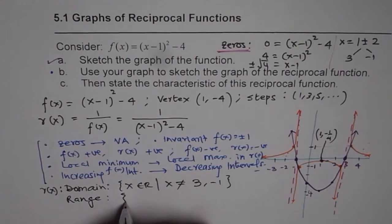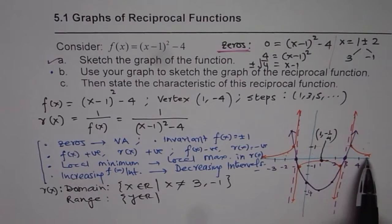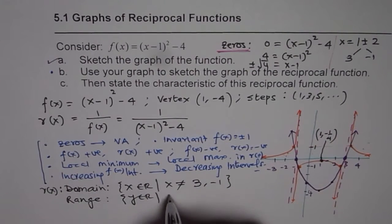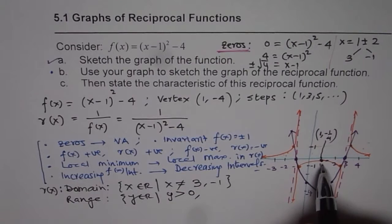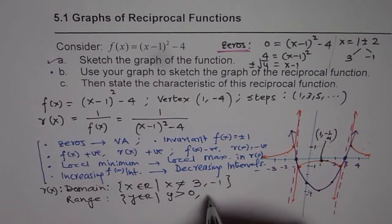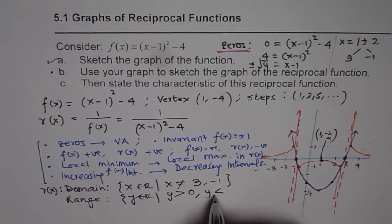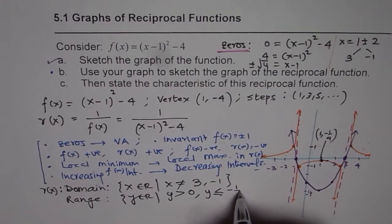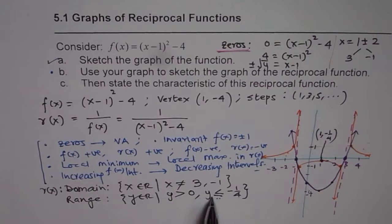Now for range: y belongs to real numbers, but y is never zero. So y > 0, or y is less than or equal to the local maximum value of -1/4. Students often miss the equal to sign. So the range is y > 0 or y ≤ -1/4.